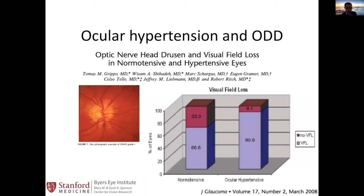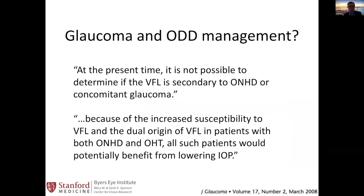Returning to my patient: for patients with ocular hypertension and glaucoma suspect with ODD, we typically treat with IOP-lowering therapy. The study concluded that it is not possible to determine if visual field loss is secondary to optic nerve head drusen or concomitant glaucoma. Because of the increased susceptibility to visual field loss, they recommend patients with ocular hypertension be treated with IOP-lowering therapy — a conclusion most glaucoma specialists would agree with. More research is needed to distinguish visual field loss in ODD and the risk of developing glaucoma in these patients.